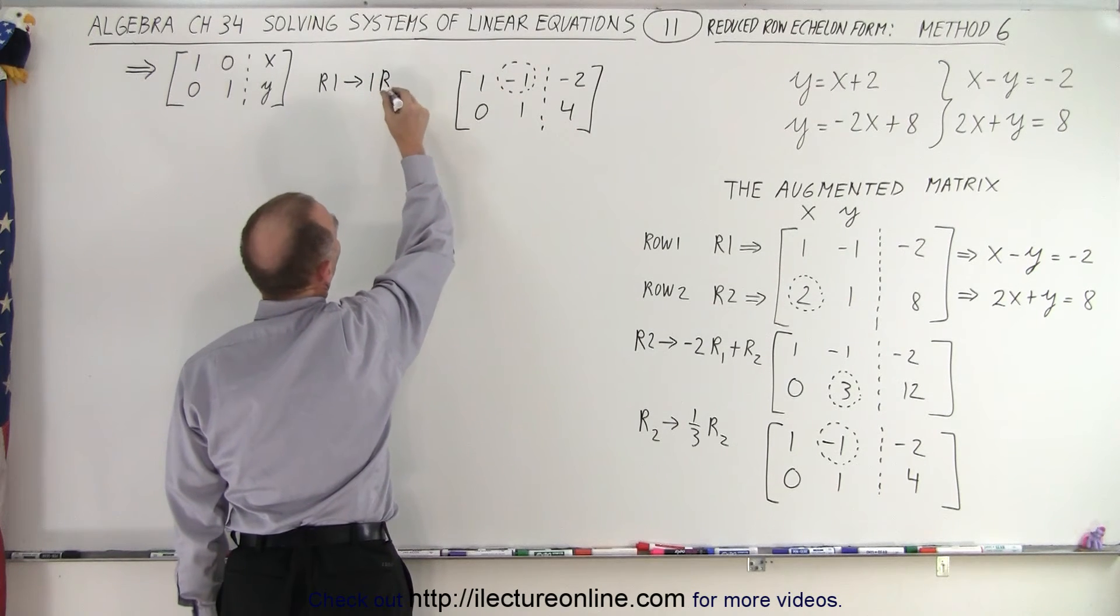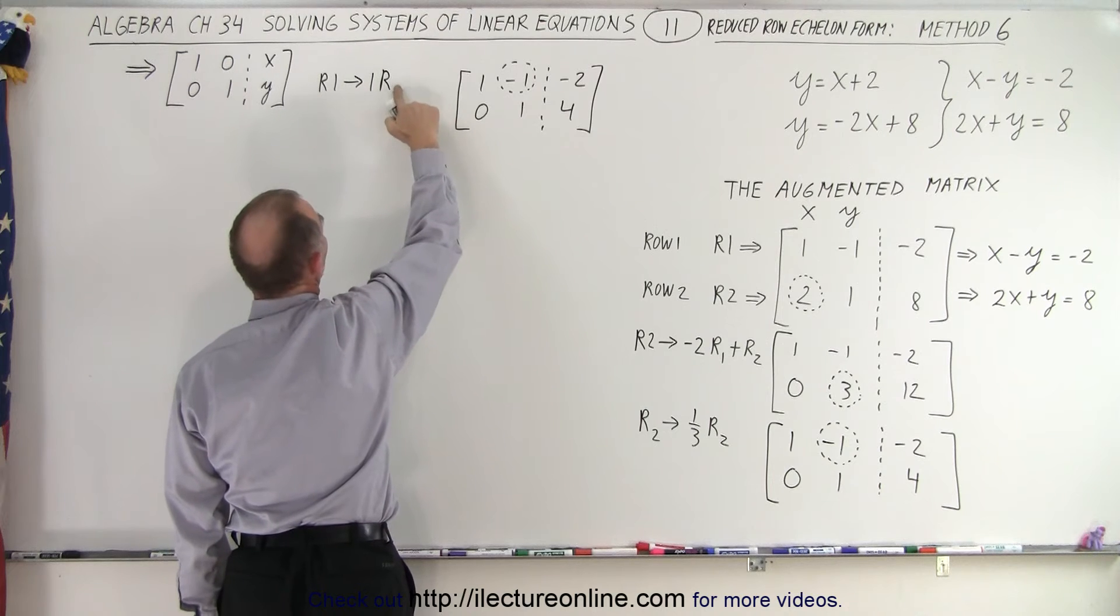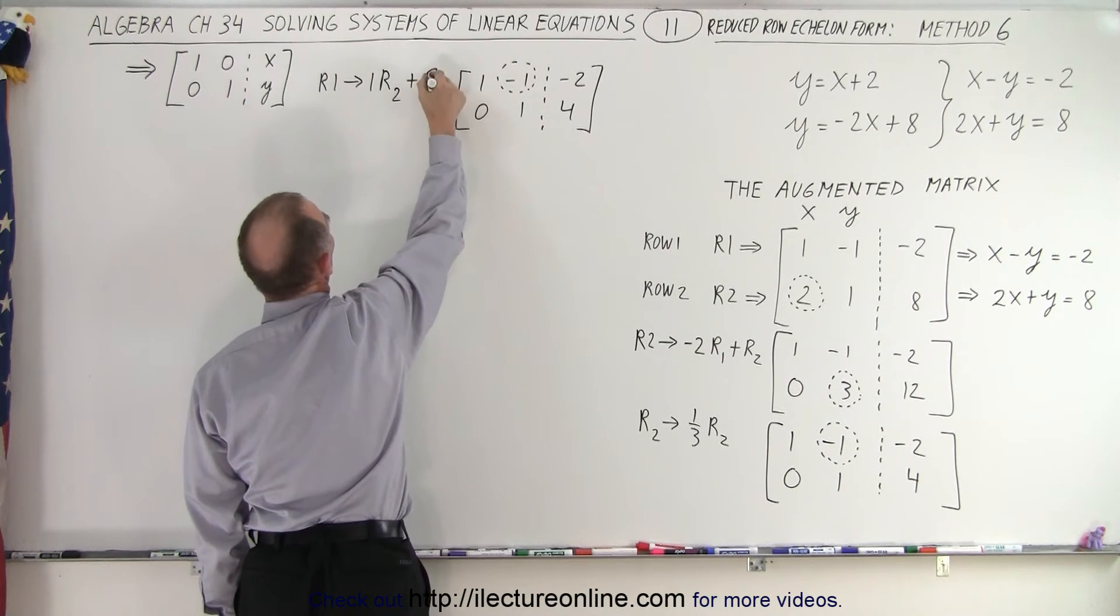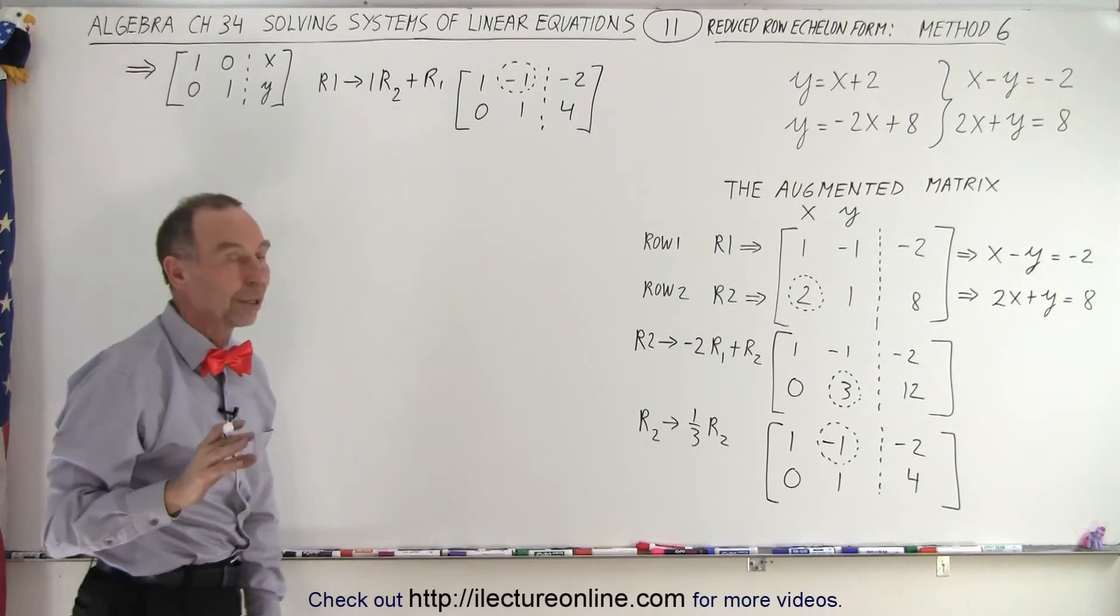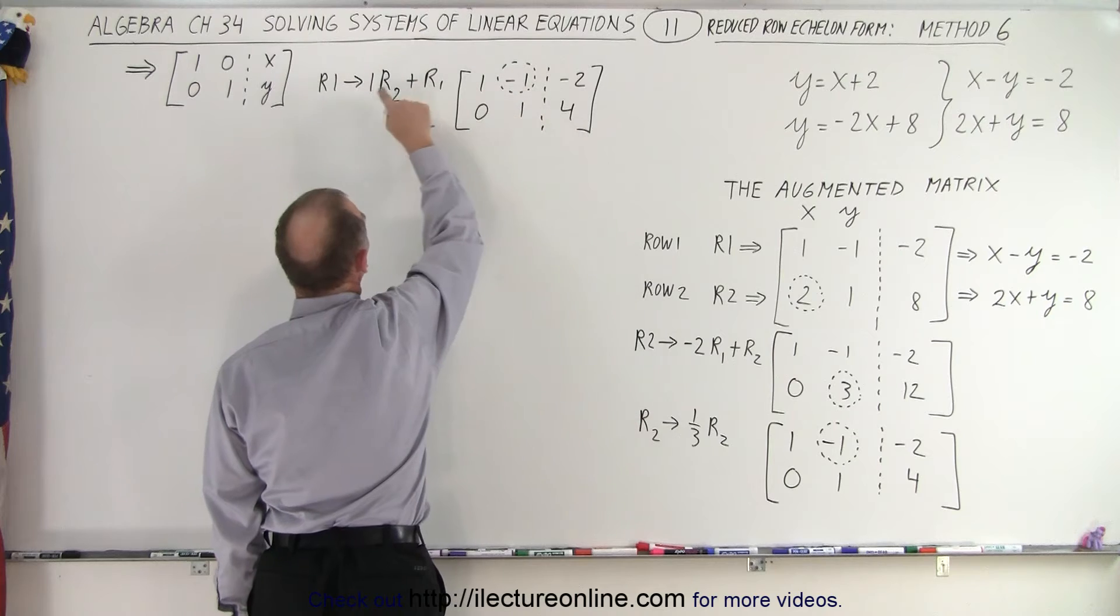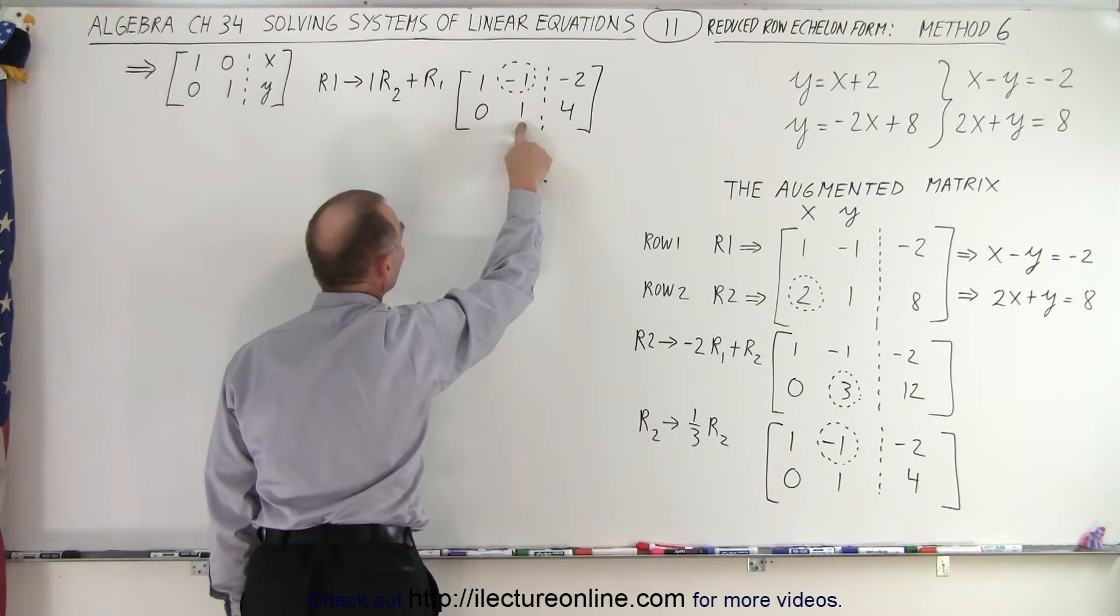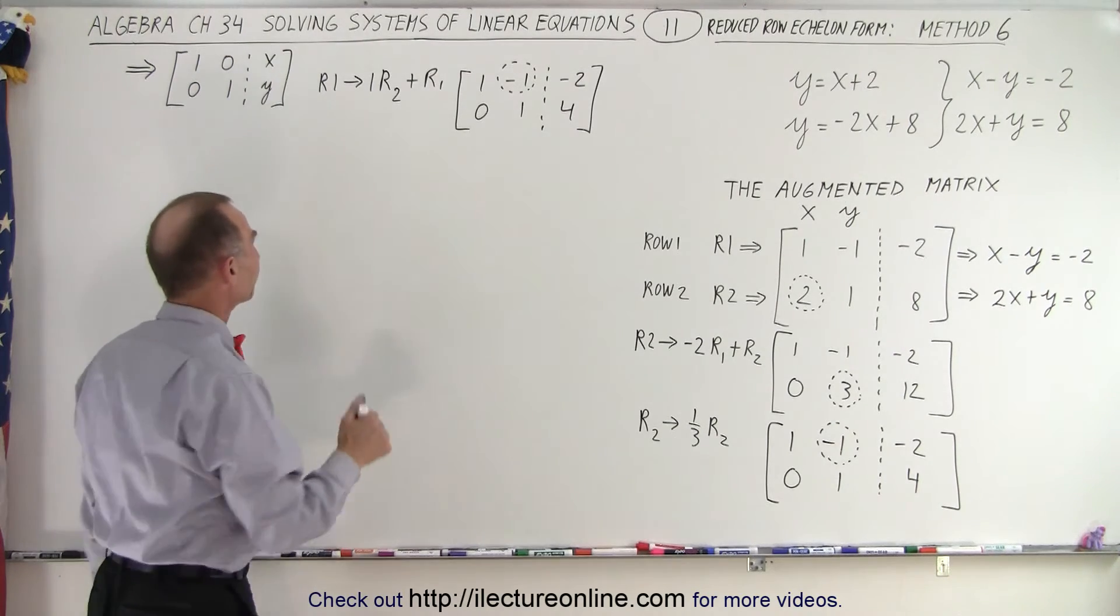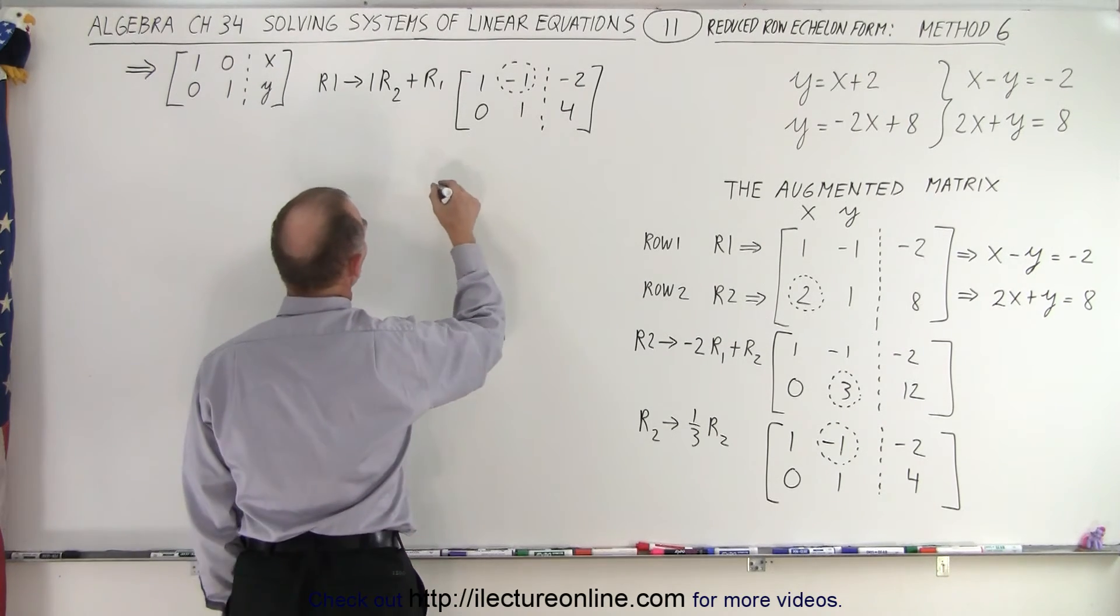Multiply times row 2 and add it to row 1. So I'm going to replace row 1 by the negative of negative 1, which is positive 1, times row 2, the row with the 1 in it, and adding it back to row 1 to get rid of that negative 1.